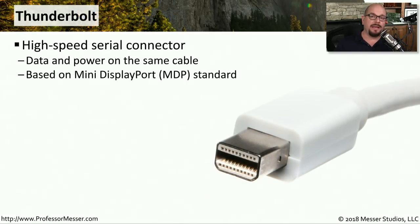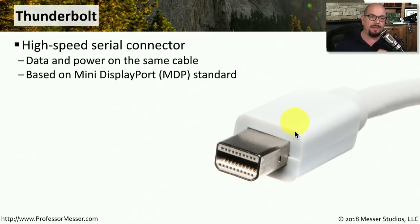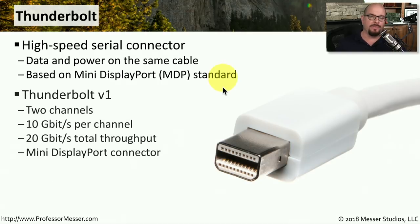If you're connecting up a peripheral device to your computer, especially a storage device or video display, you might be using a Thunderbolt connection. This is a high-speed serial connection where it is able to put data and power over the same cable. It's based on the mini DisplayPort standard, or MDP standard. Thunderbolt version 1 is able to send data over two channels, and it's able to have 10 gigabits per second on each one of those channels for a total maximum throughput of 20 gigabits per second.